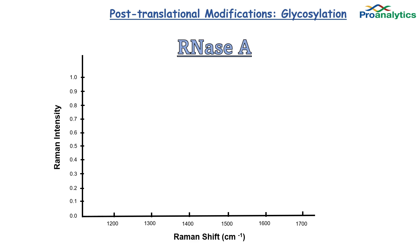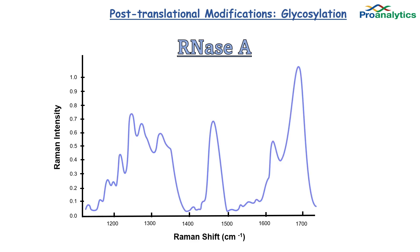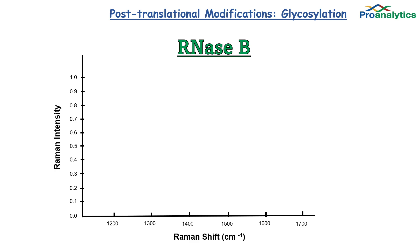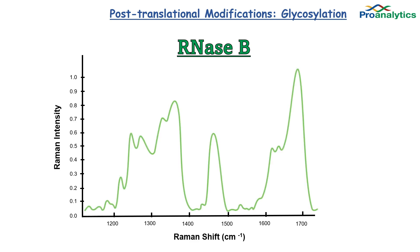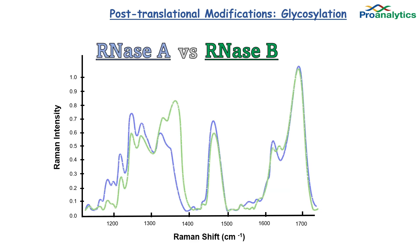Here is the Raman profile of RNase A, and here is the Raman profile of RNase B. Let's overlay the two profiles — can you see the difference? The orange circle shows the RNase B glycan sugar around 1350 in the Raman shift. Tornado is so sensitive that it also picked up the turn structure at asparagine at position 34, around 1666 to 1668 in the Raman shift.